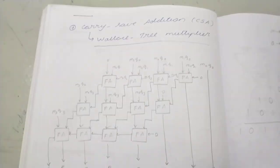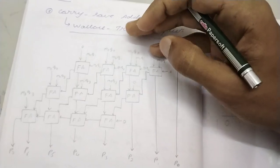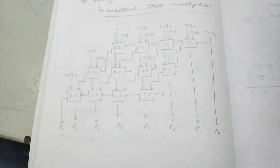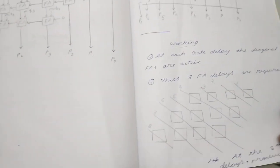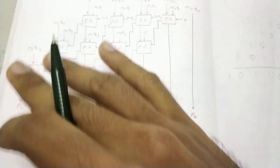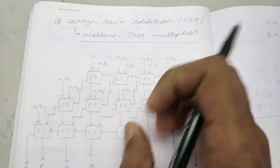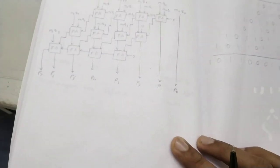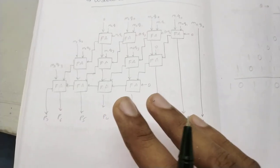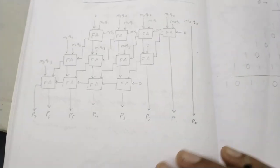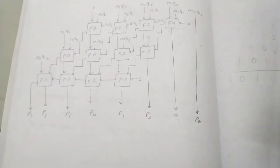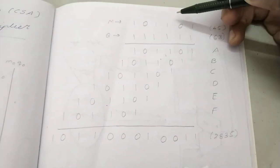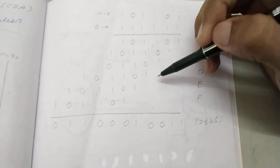In this video we will talk about carry save addition. This is something which will go much faster than the ripple carry adder. The ripple carry adder took eight gate delays to get the sum. In carry save addition, also called the Wallace tree multiplier, we want to get the sum in a lesser number of full adder delays. When we are multiplying two numbers we get six partial products.